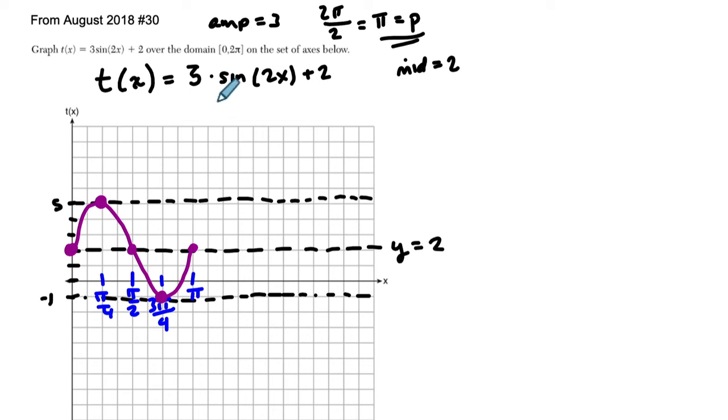There's no phase shift over here. But they say the domain has to go up to 2 pi. We can handle that. Let's keep going. This right here. Every time I hop up every 2 increments, it's in the 4ths. So this is 4 4ths, 5 4ths, 6 4ths, 7 4ths, and then 8 4ths or 2 pi.